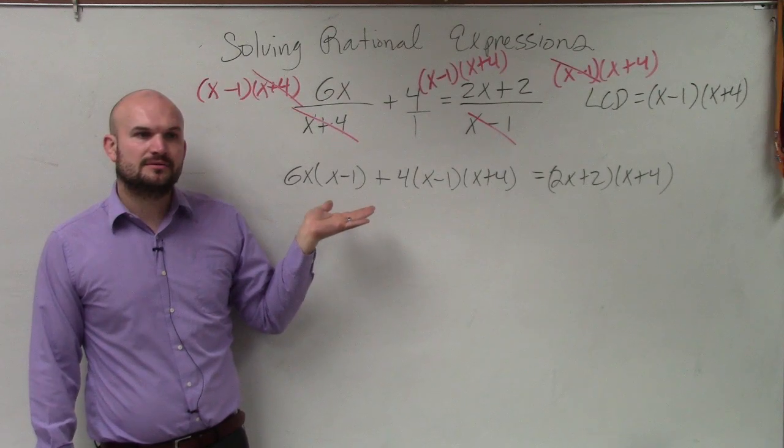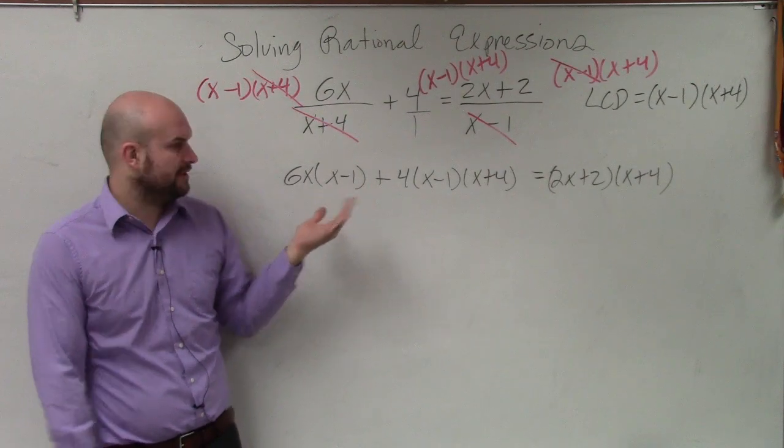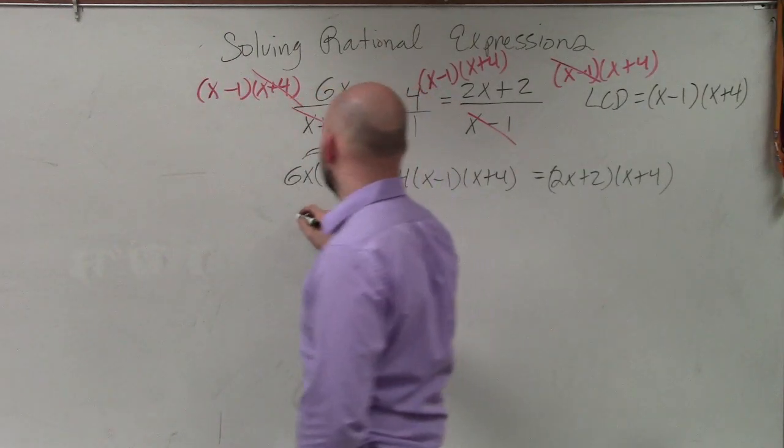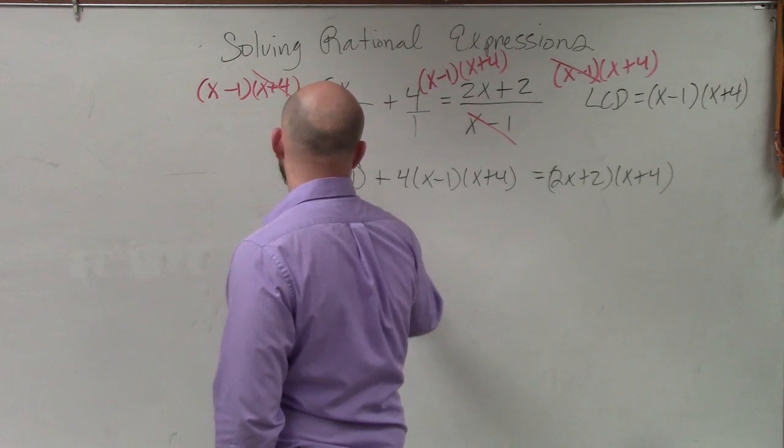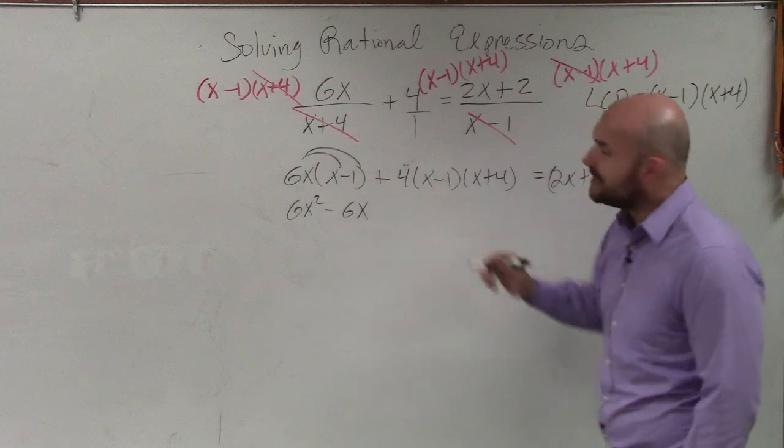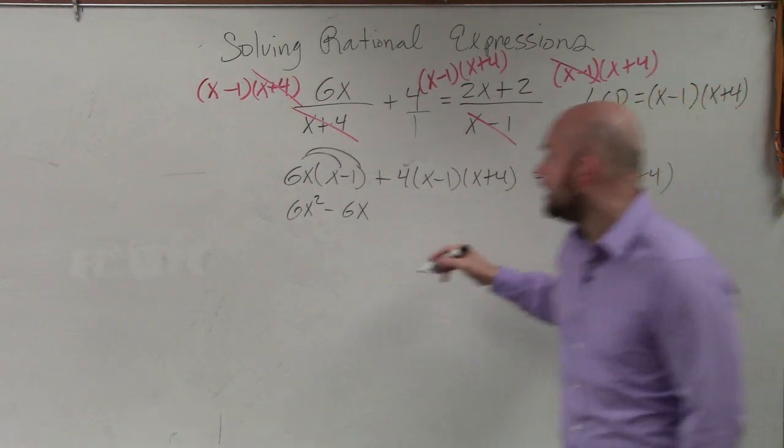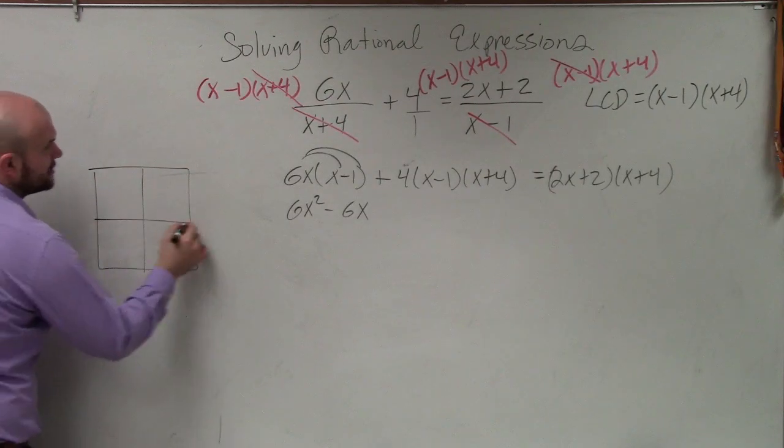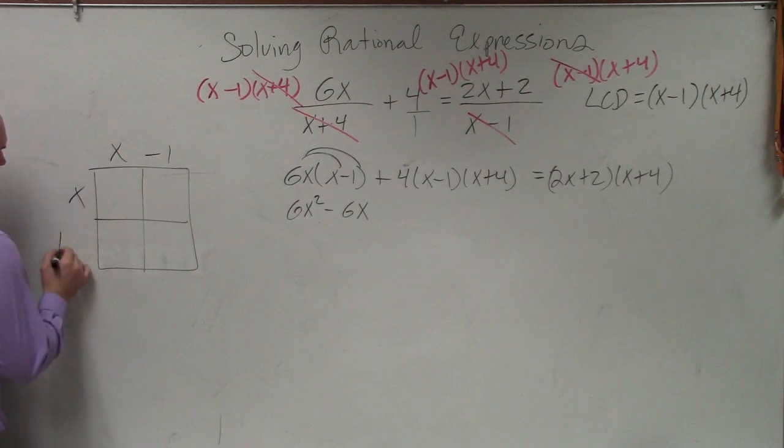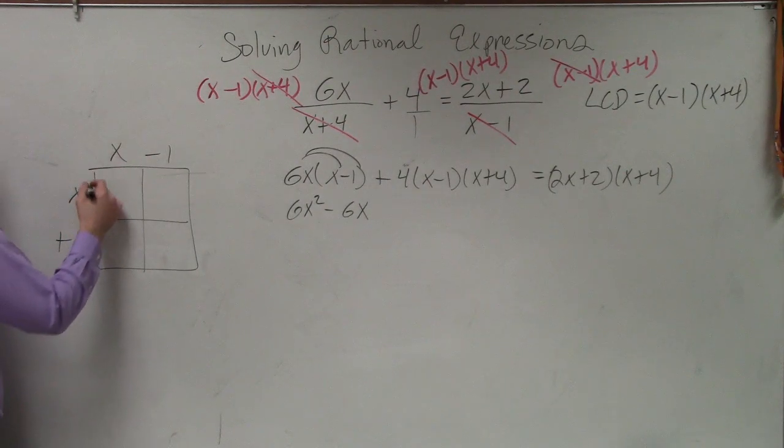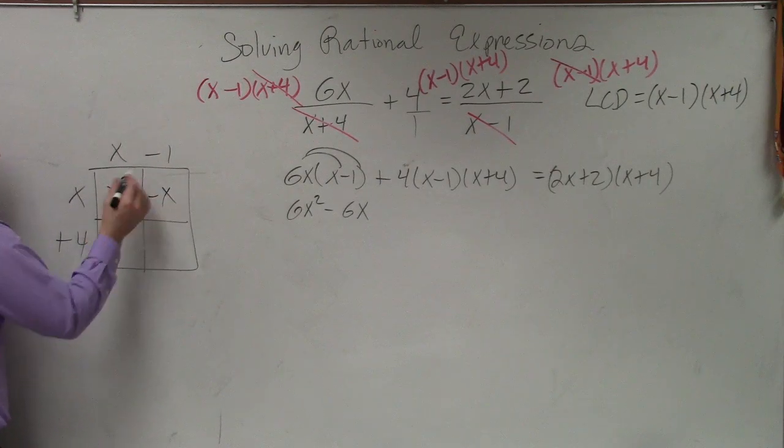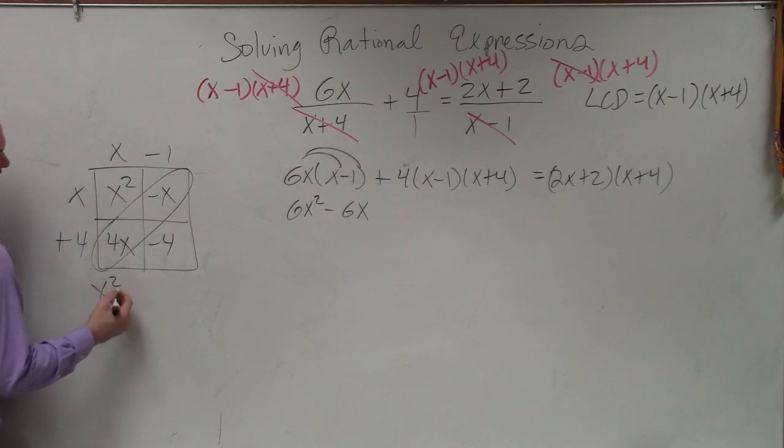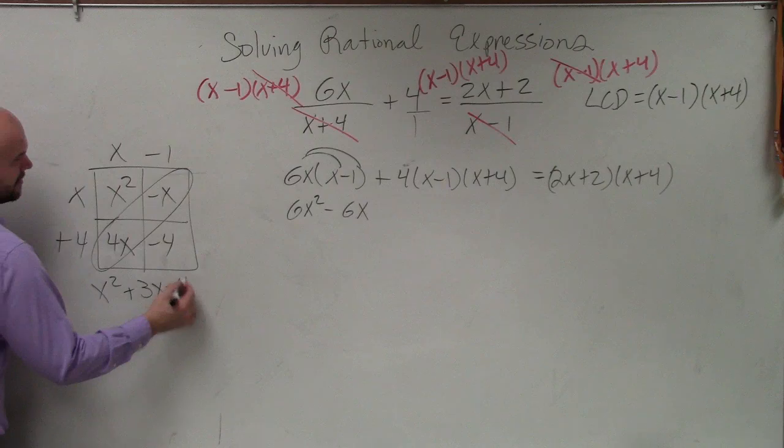And now, basically, all we're doing is applying the distributive property. You have 6x. 6x times x minus 1 is going to be 6x squared minus 6x. Over here, I can apply distributive property, but I would like to multiply these out. If I'm going over here, I'd like you to be writing this stuff down rather than what you're doing. So over here, you're going to be multiplying this. X times x is x squared, negative x, 4x, negative 4. Combine like terms, you have x squared plus 3x minus 4.